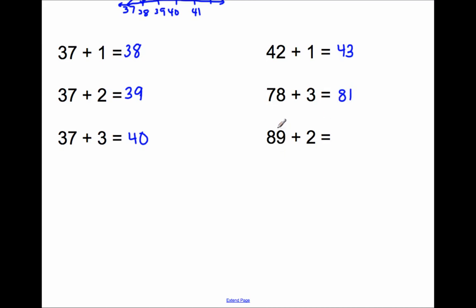And finally, 89 plus 2, you'd say 89, 90, 91. 89 plus 2 equals 91.